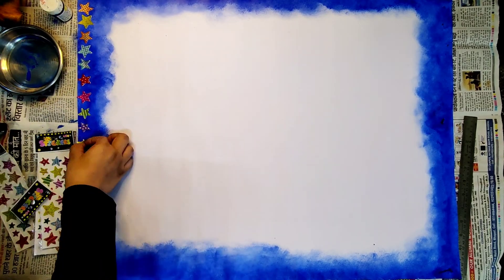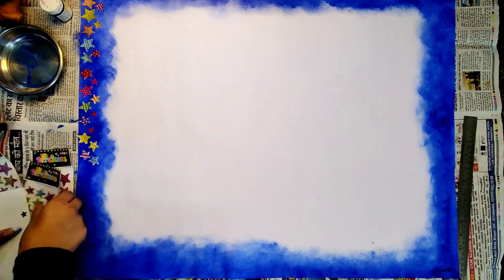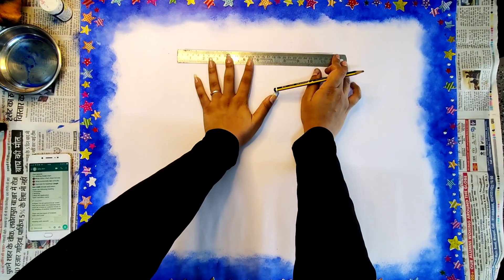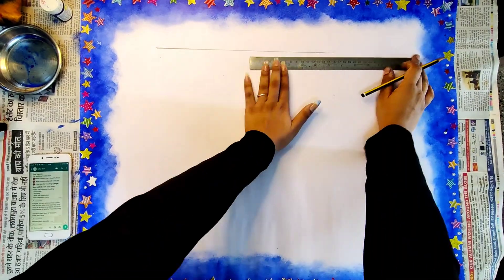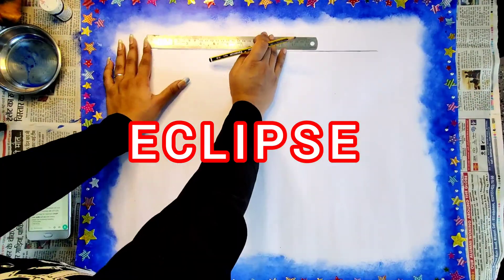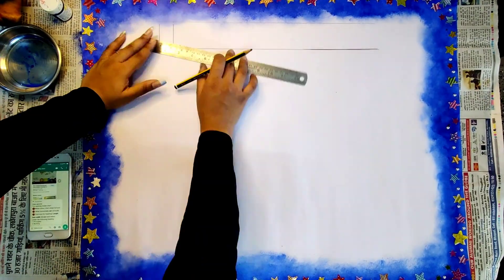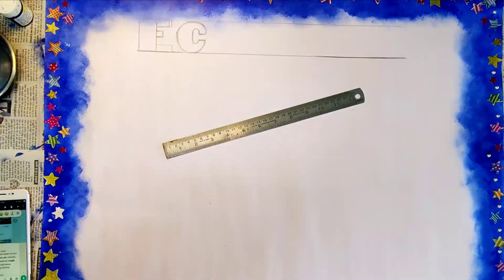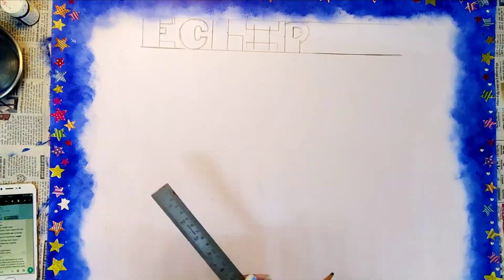Now after sticking the stickers, draw two parallel lines in the center of the sheet. Here we'll be writing our main heading, that is 'Eclipse'. I am writing the heading 'Eclipse' in bold and dark black letters. You can use any font, but it should be visible from far.